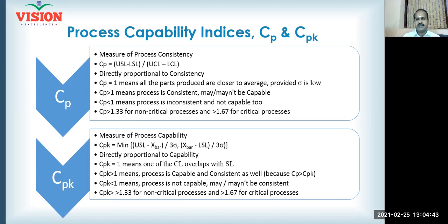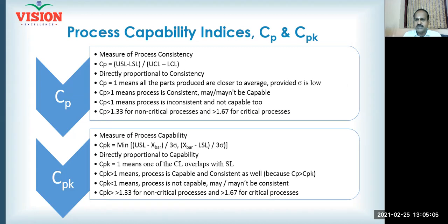CP is basically the measure of process consistency. The mathematical formula for CP is: USL minus LSL divided by UCL minus LCL. The numerator, USL minus LSL, is the tolerance given by your customer — the specification width. The denominator, UCL minus LCL, represents the control limits, which are the process extremities.